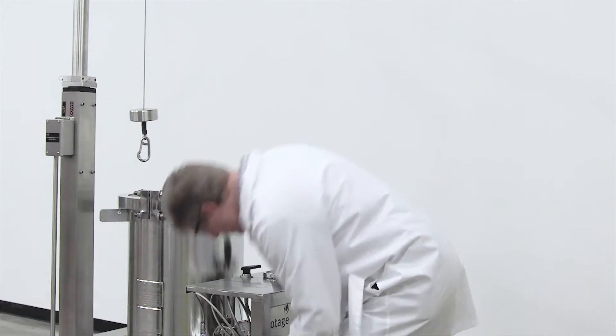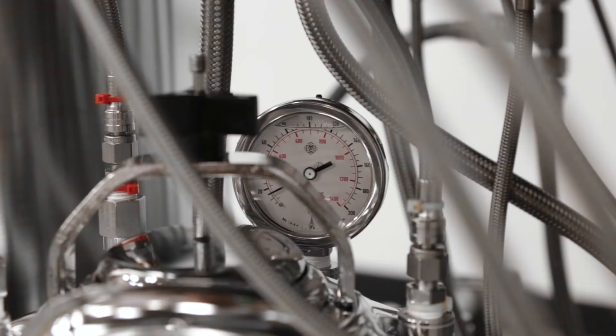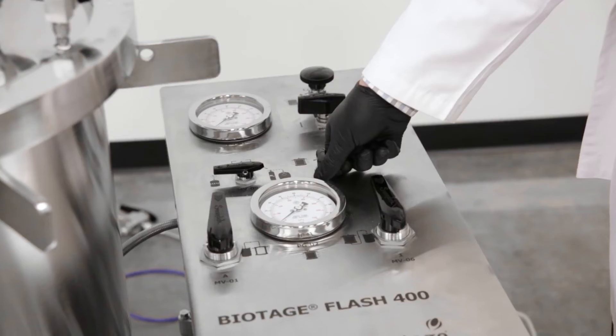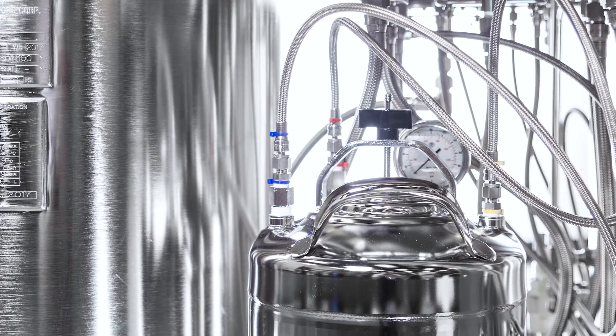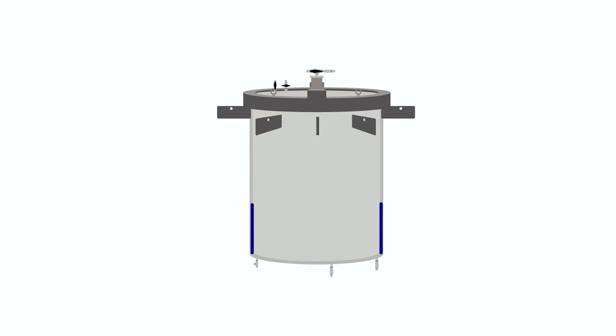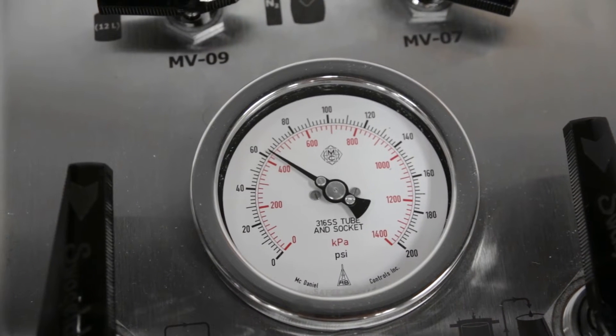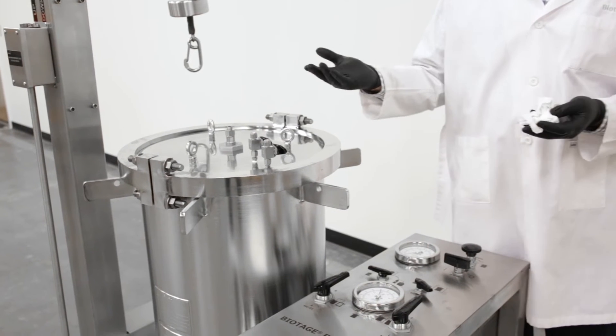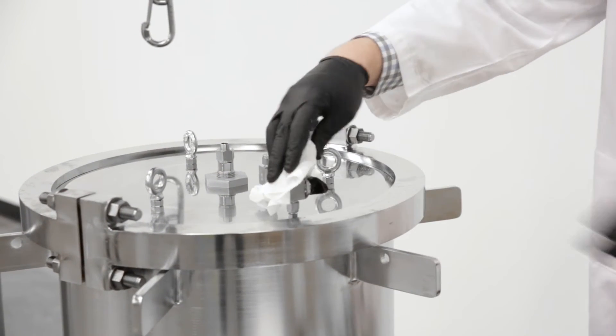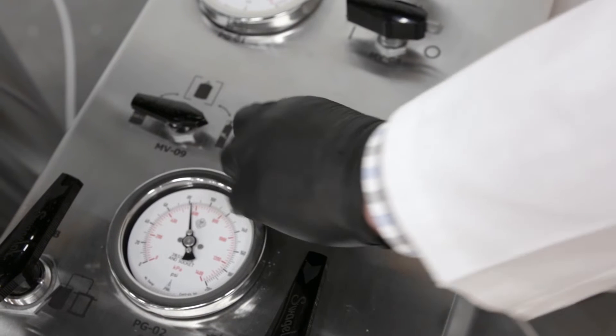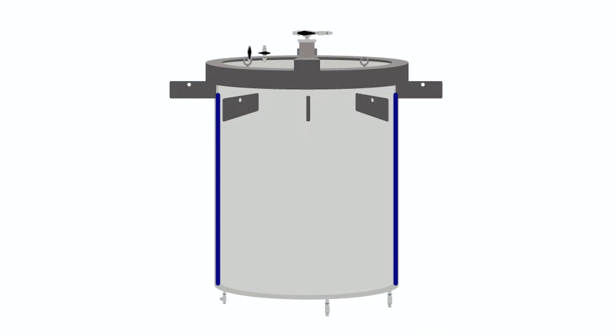The nitrogen valve is now opened to pressurize the compression fluid reservoir. When the compression valve is opened, fluid from the reservoir starts to flow into the compression module. As the pressure rises, air is led out through the vent valve until fluid starts to appear.